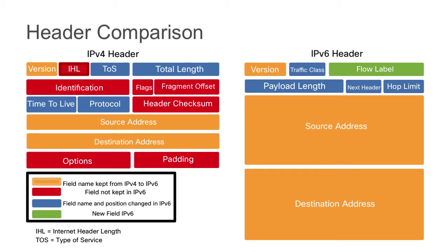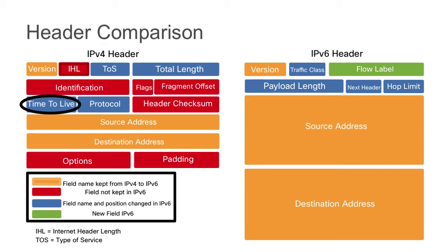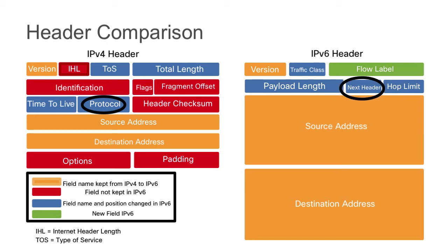Next, in IPv4 we have the total length; in IPv6 we have the payload length — the name and position were changed. We have a time to live value in IPv4; we call that a hop limit in IPv6, but again it's designed to prevent routing loops. Next, we have a protocol field in IPv4, and rather than call it the protocol field, in IPv6 we have what's called the next header field. The next header can point to a layer 4 header — TCP or UDP — or it could point to another layer 3 header like a routing header, so the functionality was changed just a bit.